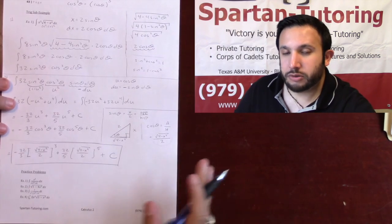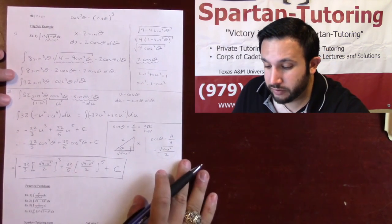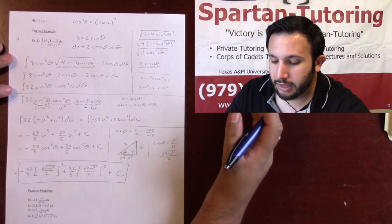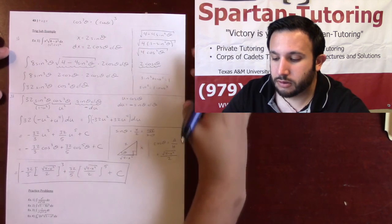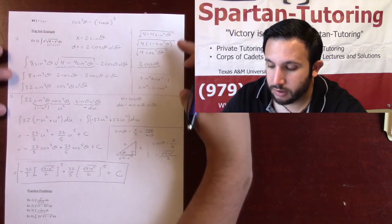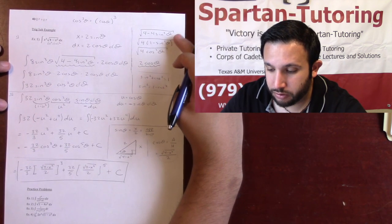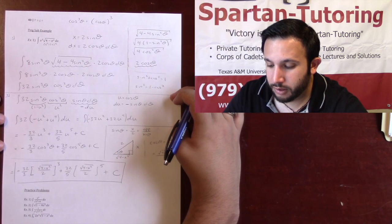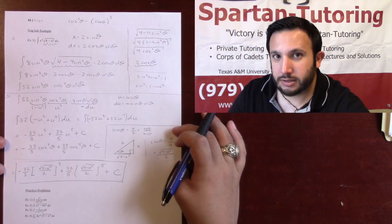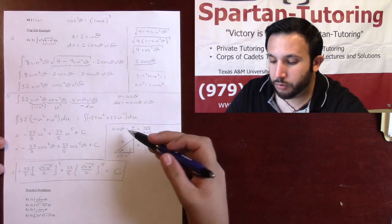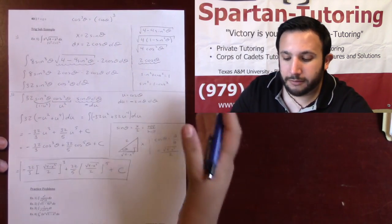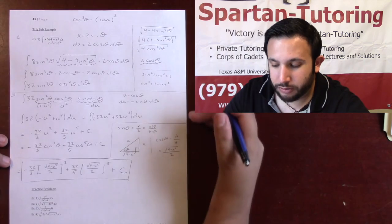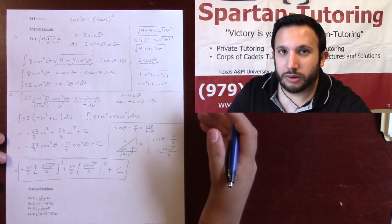If you dozed off and looked at this paper you'd think, oh my goodness. But that's why I break it into steps: first substitute, make sure you know your trig identities; then do the trig integral, which we learned in the previous video; then put theta back in terms of x by making a right triangle based off that initial substitution and find whatever you're looking for. All trig sub problems follow this process, and as long as you follow it this way, you're going to be more than okay.